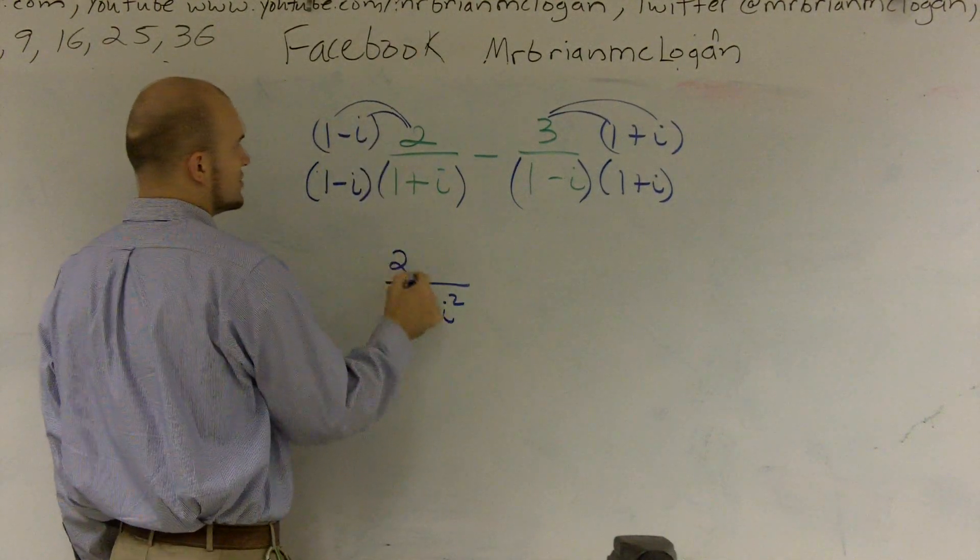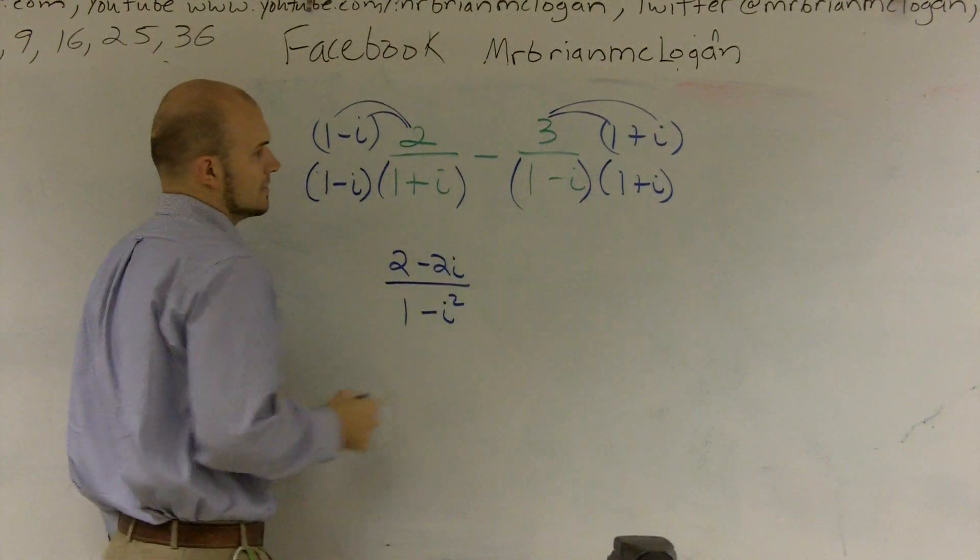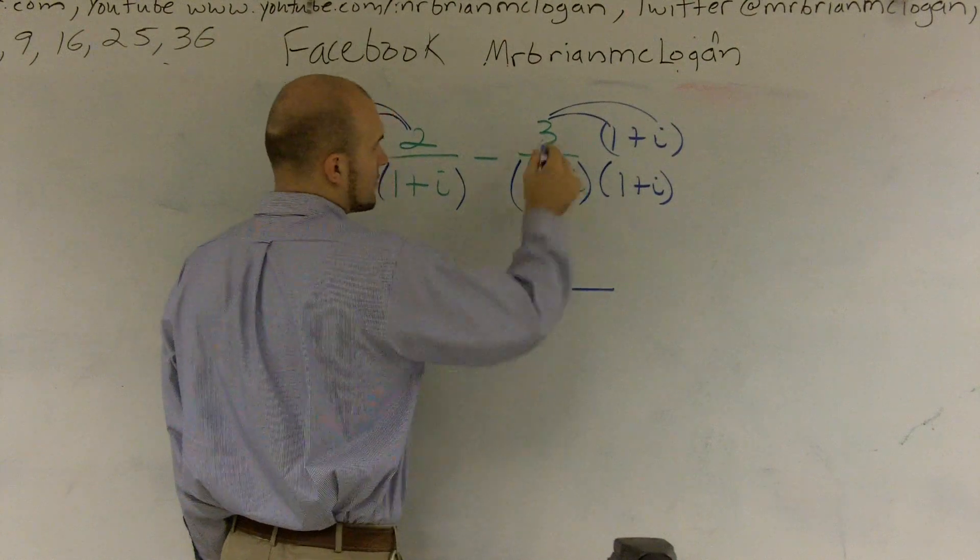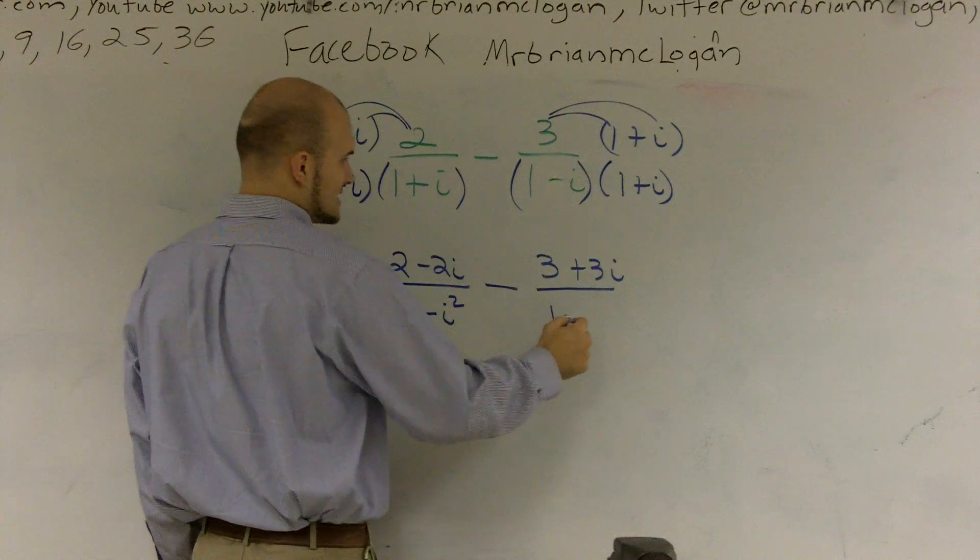And then 2 times 1 is 2, 2 times negative i is negative 2i minus 3 times 1 is 3, 3 times i is 3i, all over 1 times 1. Well, it's going to be the exact same.